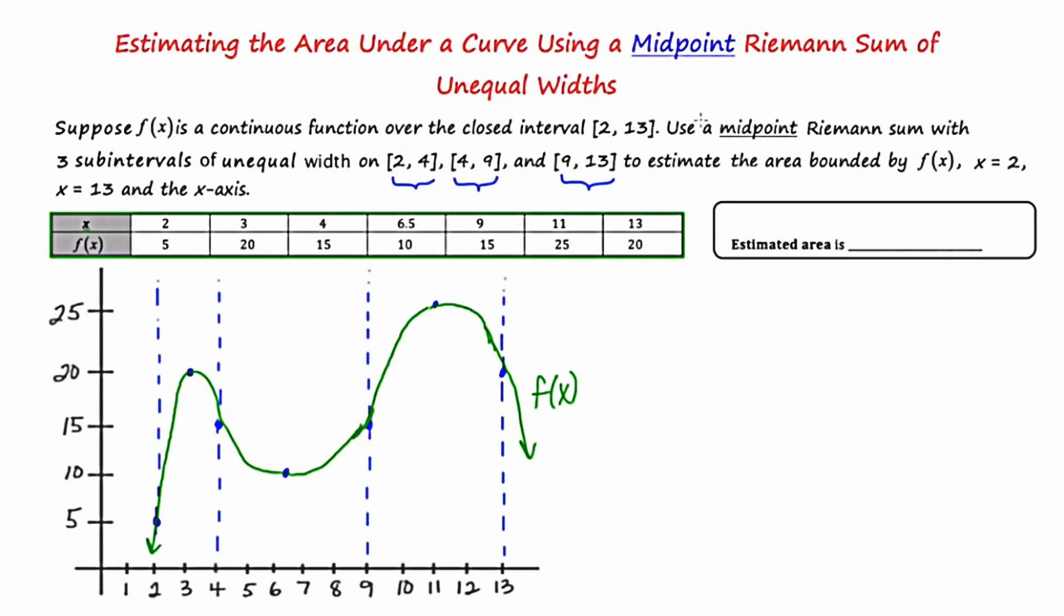So I want to approximate the area under this curve given these three rectangles of unequal width and the x-axis. Now we know that area is equal to base times height. And we actually are going to have three rectangles. So I'm going to set up three products to represent base times height for each of the three rectangles. Now the base of the first rectangle is going to be from 2 to 4 or have a span of 2. The next rectangle will go from 4 to 9 and have a span of 5. And our final rectangle will go from 9 to 13 and have a span of 4.